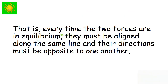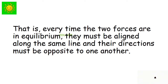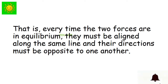At equilibrium, the two forces are equal in magnitude. Now try to maintain equilibrium without having the two forces along the same line — you will find this is impossible. That is, every time the two forces are in equilibrium, they must be aligned along the same line and their directions must be opposite to one another.